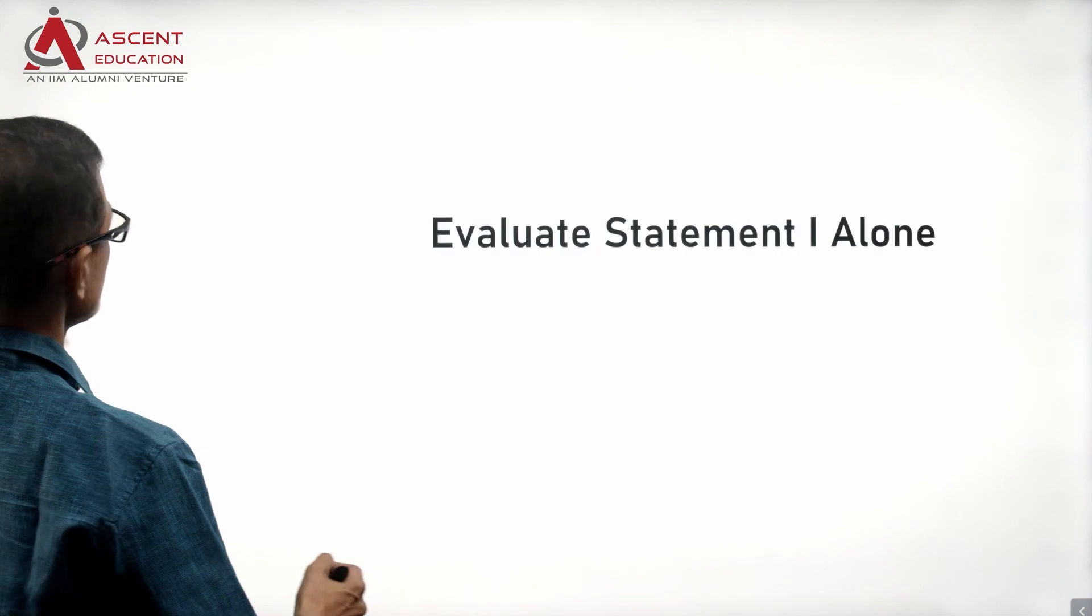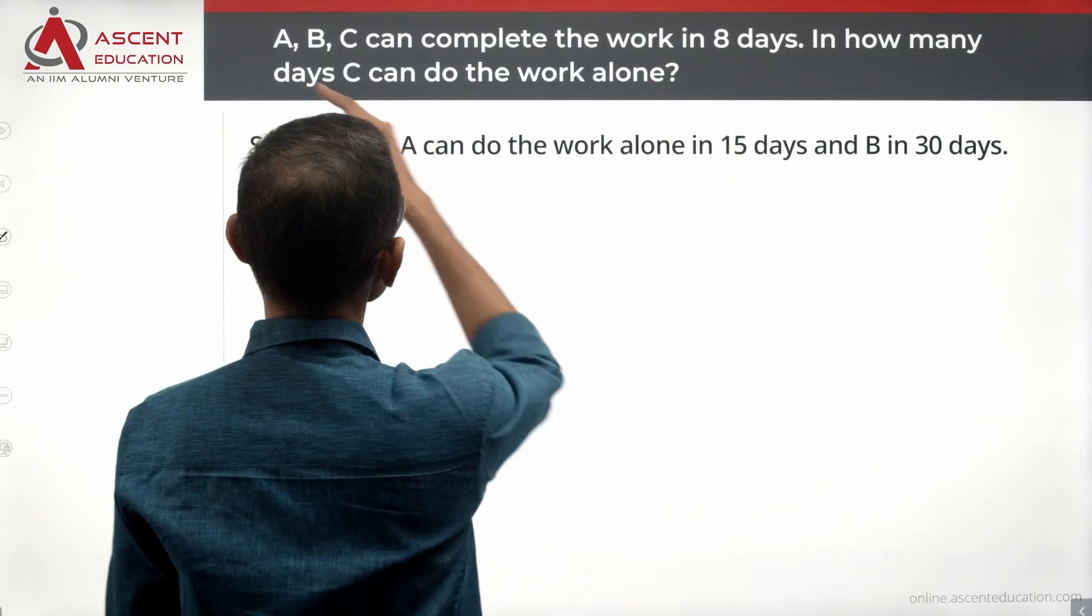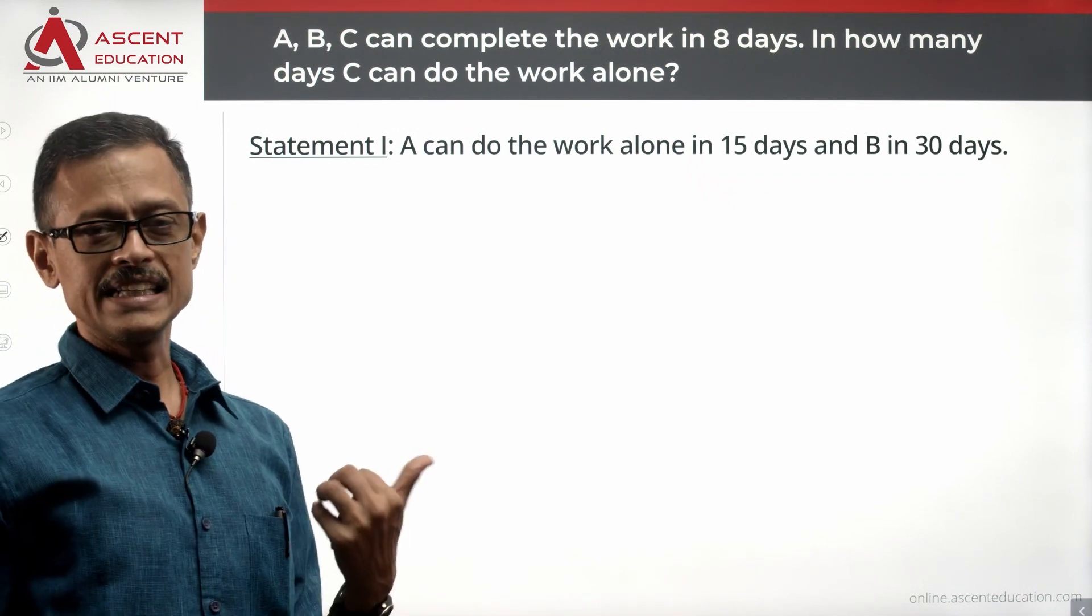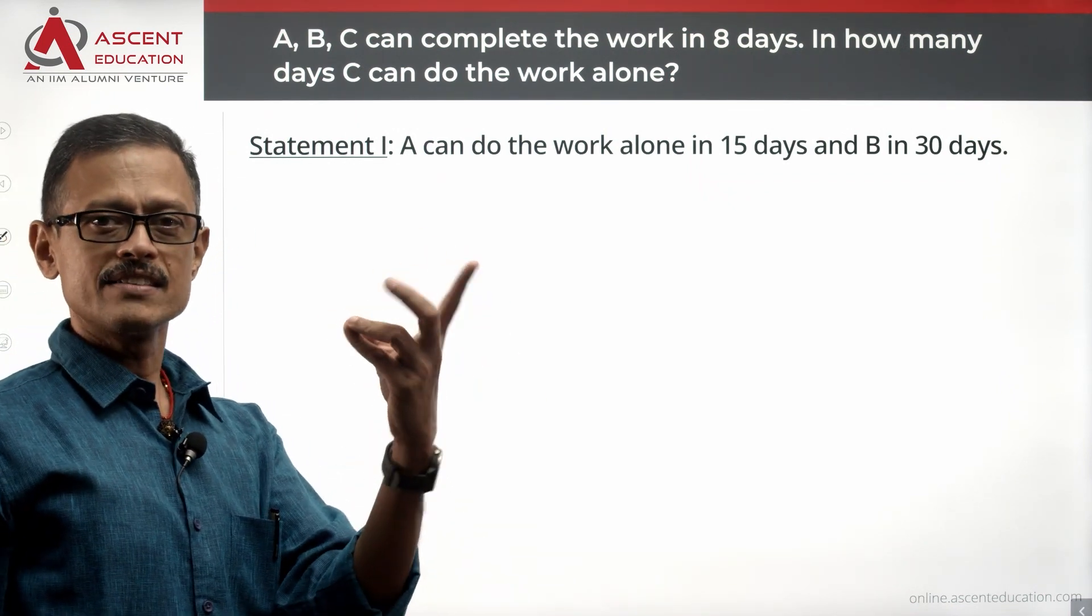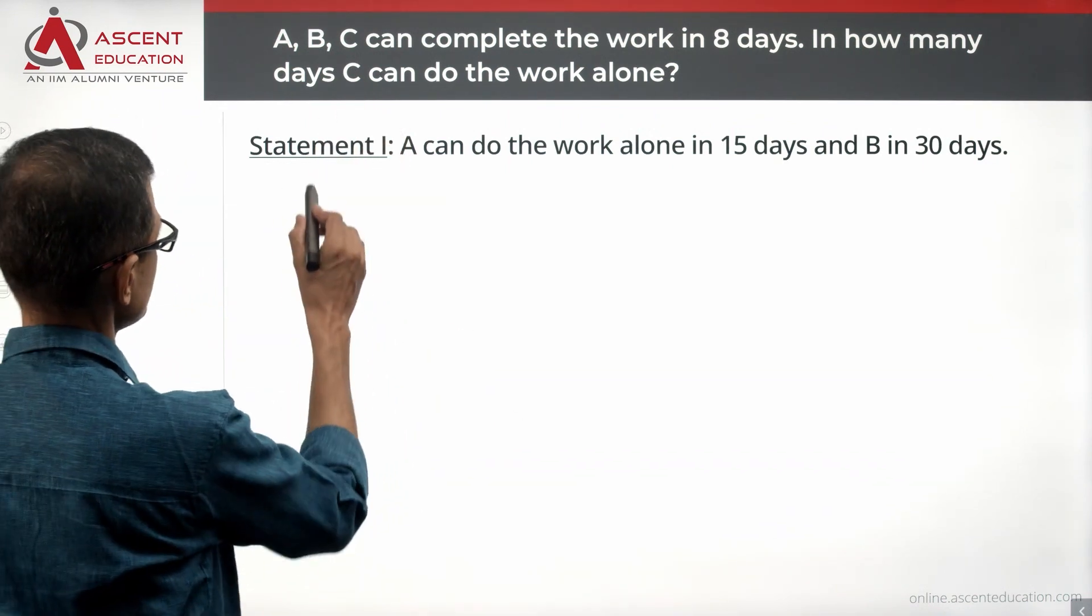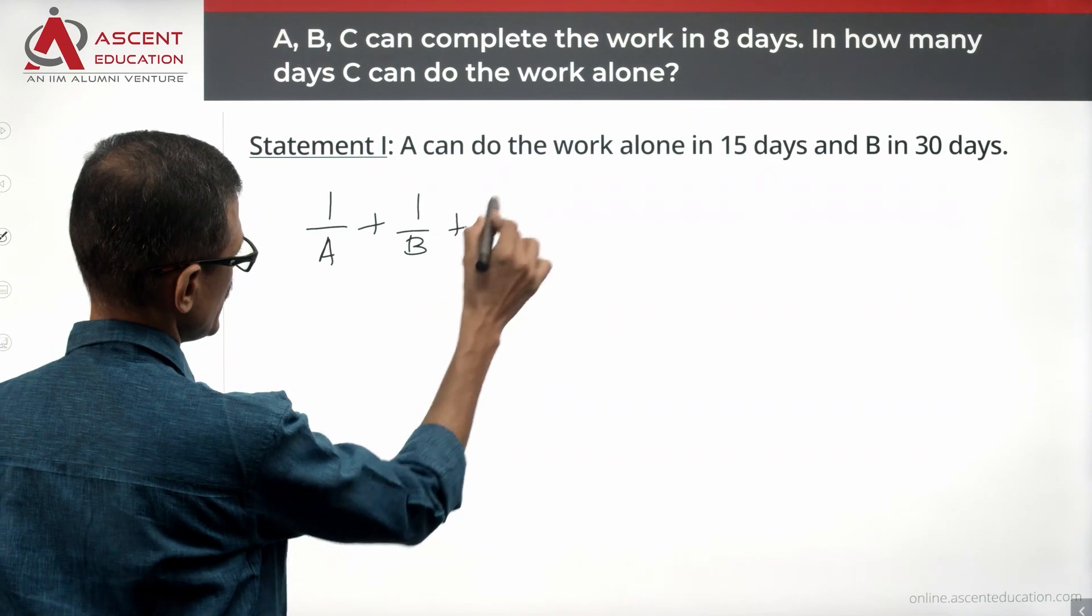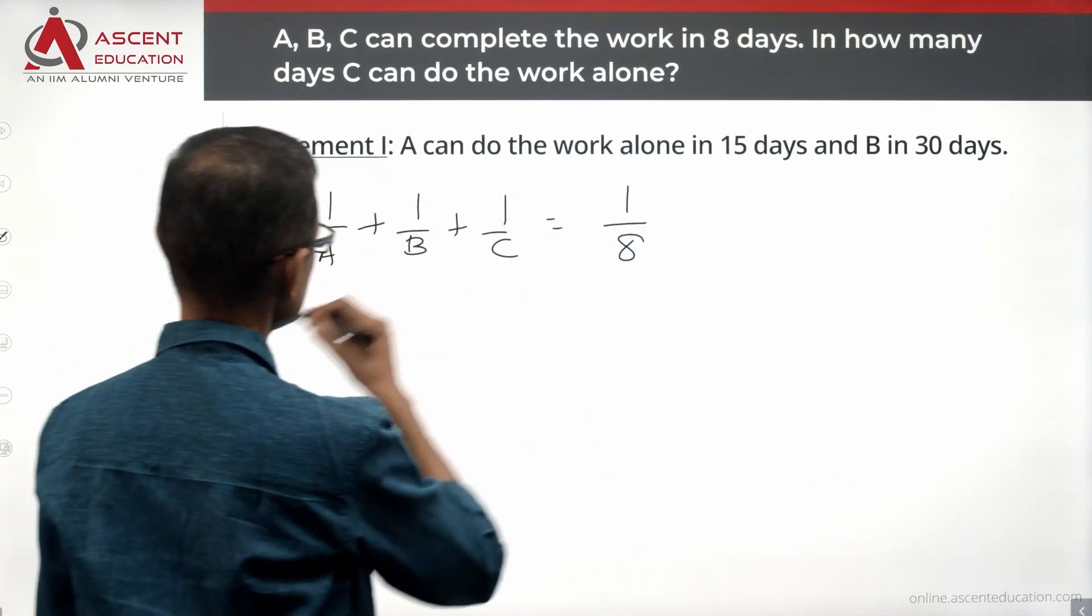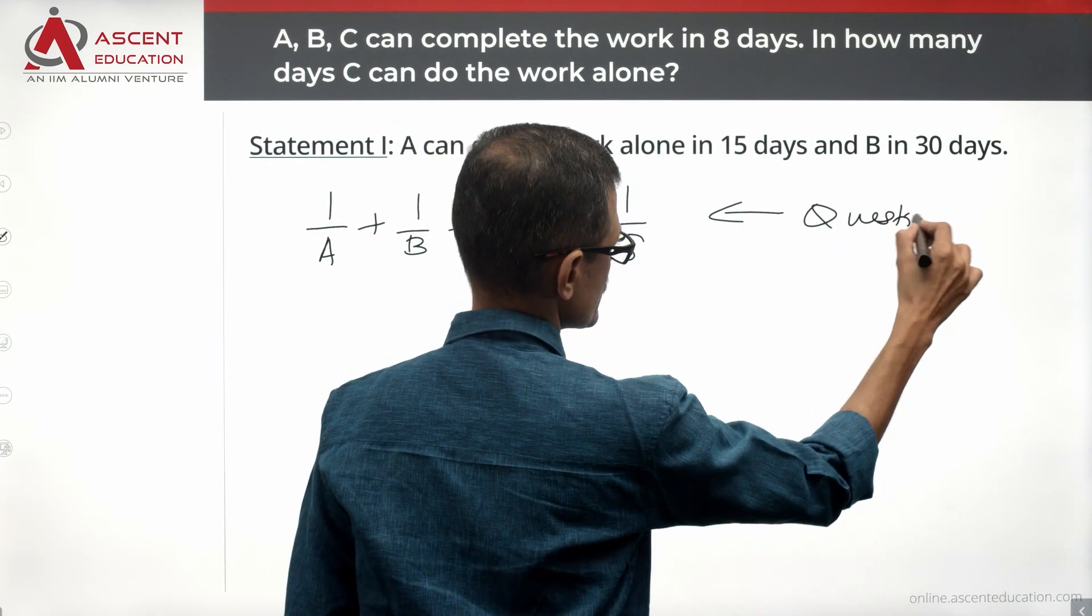Start with what we have in the question stem and then evaluate statement 1. Question stem says A, B, C can complete the work in 8 days. So let A take A days, B take B days, C take C days. In that case, it will essentially be 1 by A plus 1 by B plus 1 by C is equal to 1 by 8. This is from the question, not from the statement.